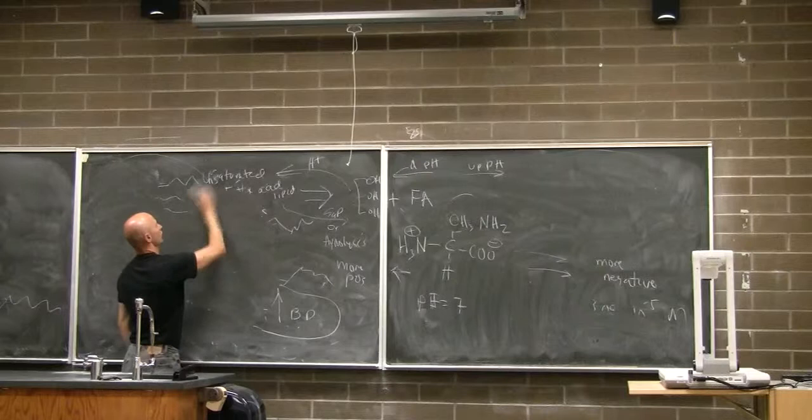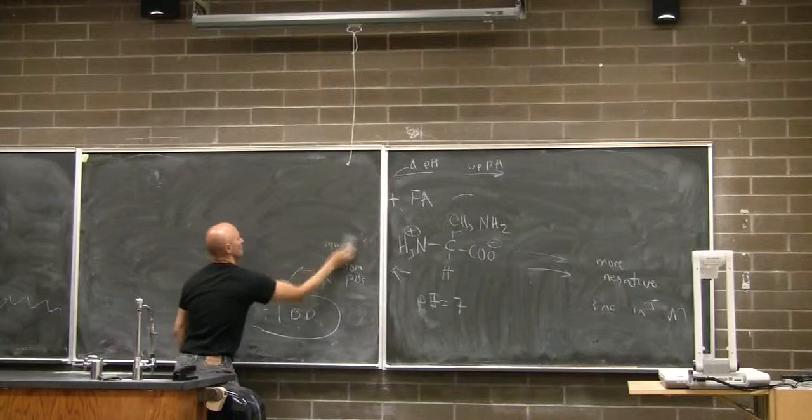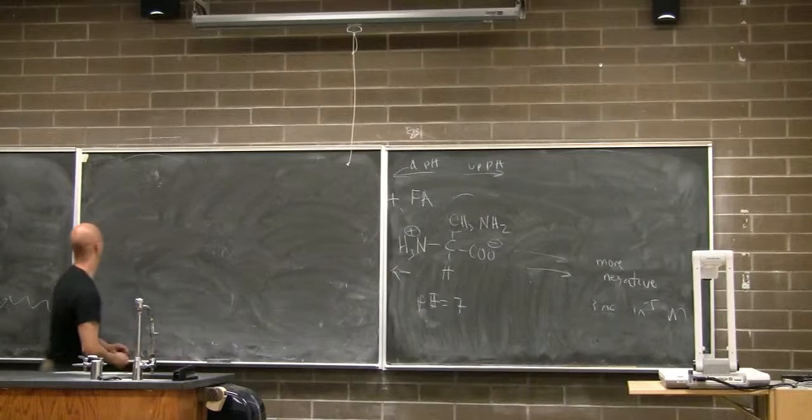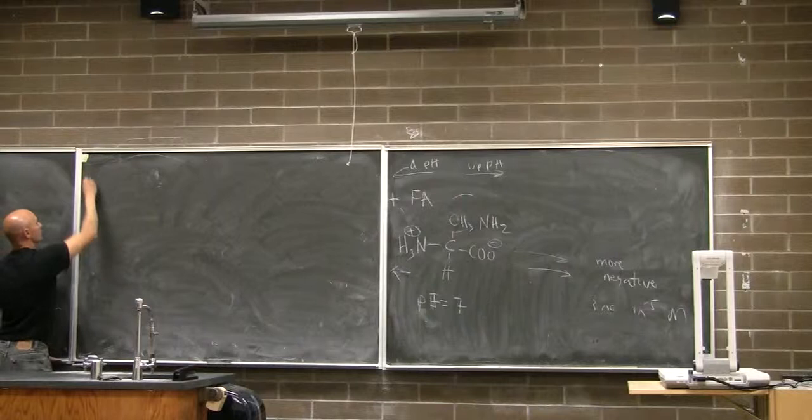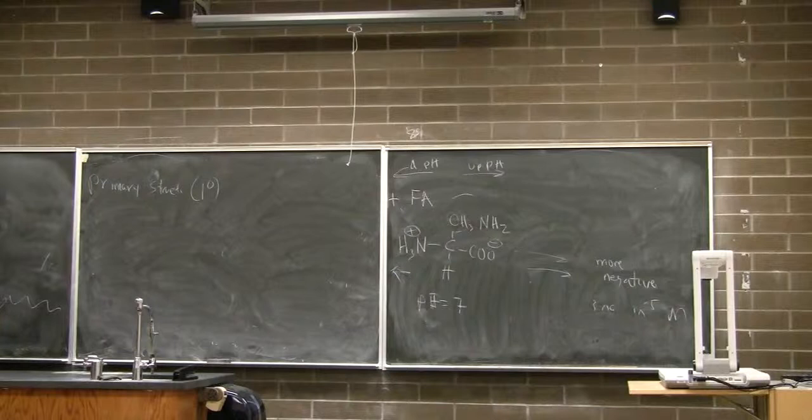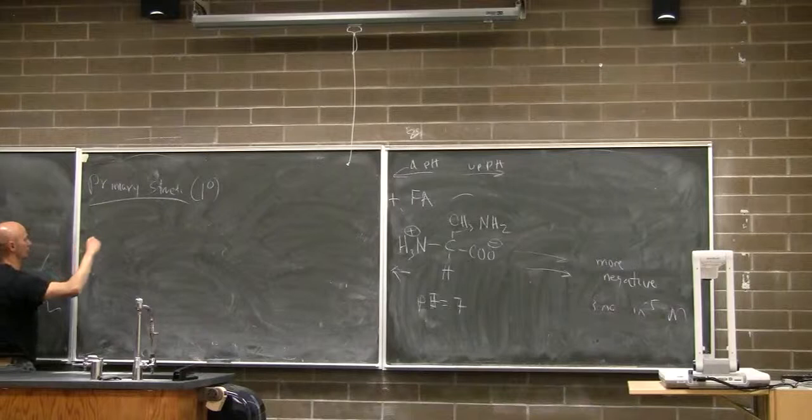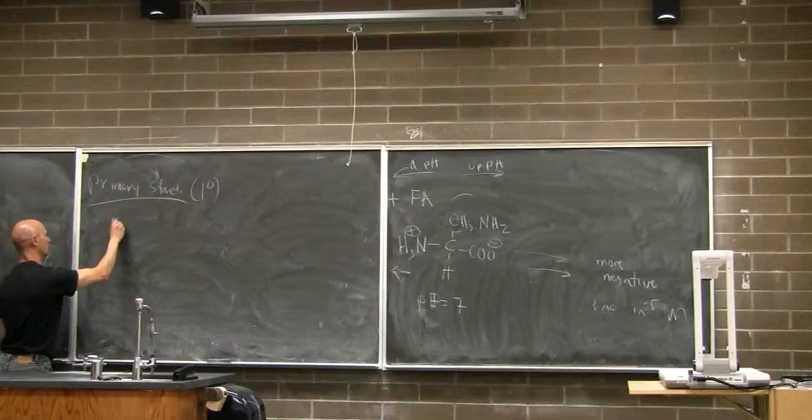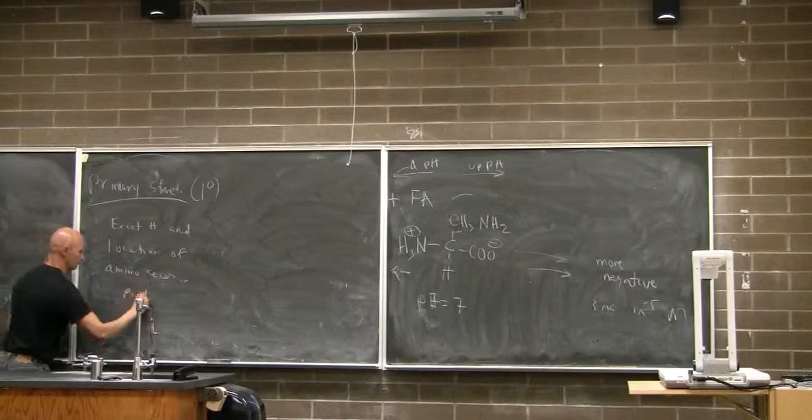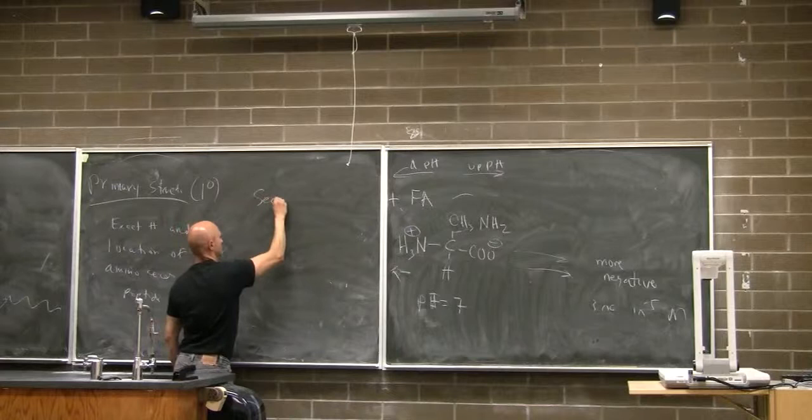So, secondary structure. Is the alpha helix beta pleated sheets. And that's formed by the H bonding. Yeah. How long? You got some. I think. Oh, okay. Good. Primary structure. This is also sometimes, I think, a one degree structure. I may be confused about that. But this is what you can see. So, from here, we're getting the exact number and location of amino acids in the peptide, right? Okay. Secondary structure.